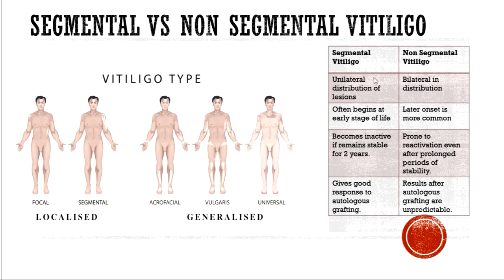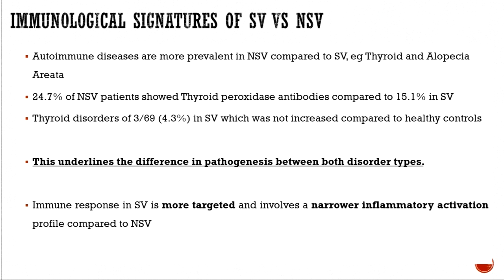I want to highlight a few immunological signatures. In non-segmental vitiligo, there is a higher prevalence of autoimmune diseases. About 25% of non-segmental vitiligo patients show thyroid peroxidase antibodies compared to 15% in segmental vitiligo. When comparing segmental vitiligo and healthy controls, there is no difference in thyroid-related disease. This shows a difference in pathogenesis between both subtypes. The immune response in segmental vitiligo seems more targeted, involving a narrower inflammatory activation profile.